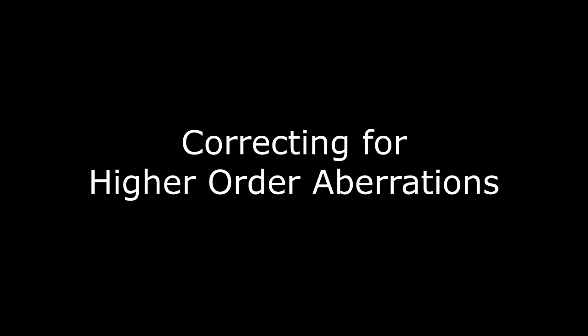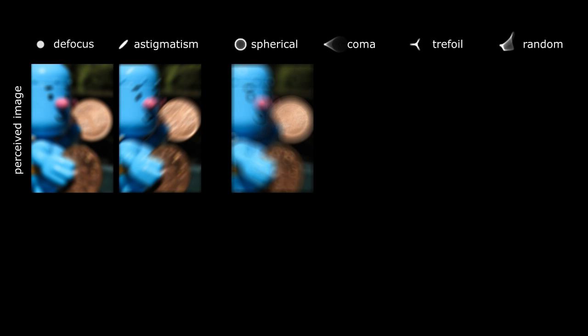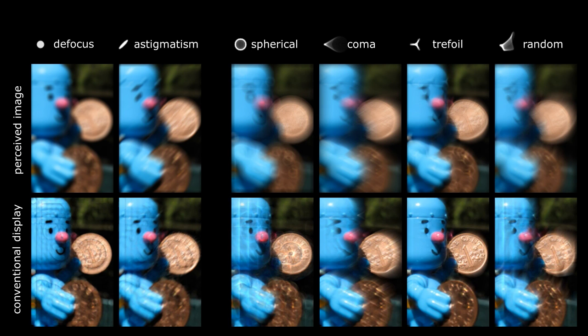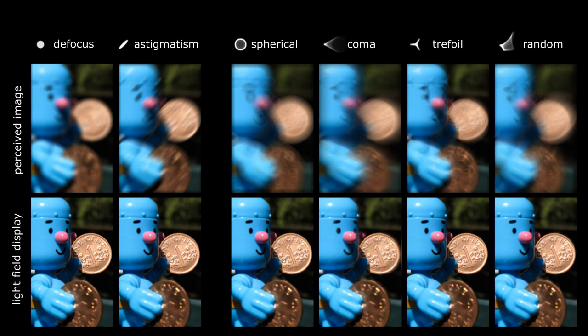Finally, we are also able to correct higher order aberrations. Unlike defocus, higher order aberrations have non-circular point spread functions. Interestingly, a few of them, such as trefoil, can be corrected with conventional displays, but most cannot. Our method successfully corrects all such aberrations.